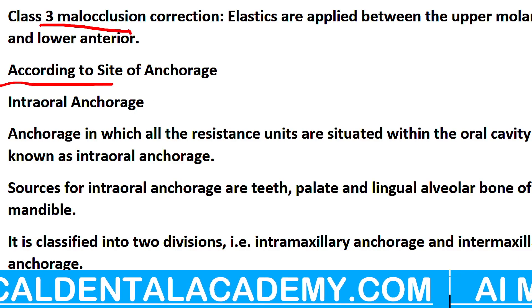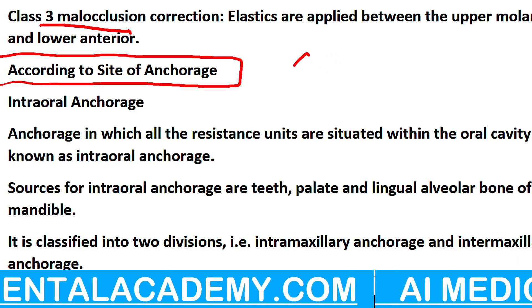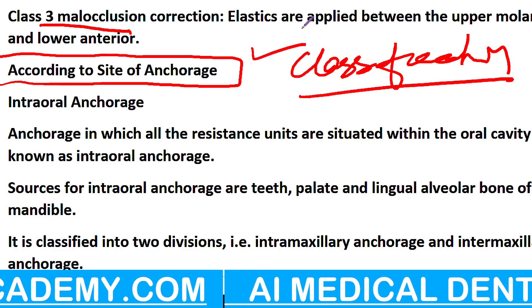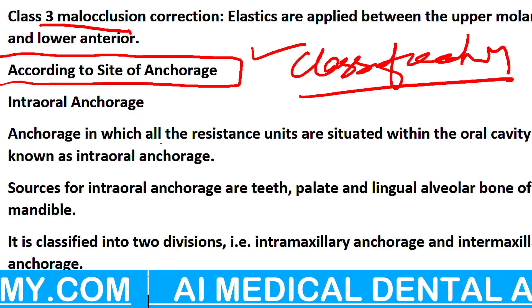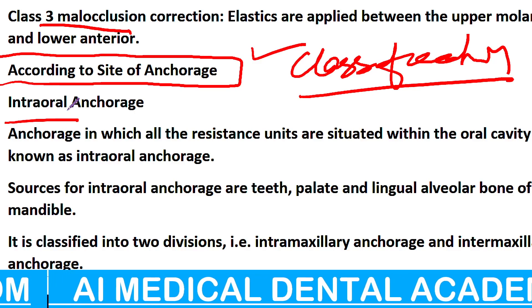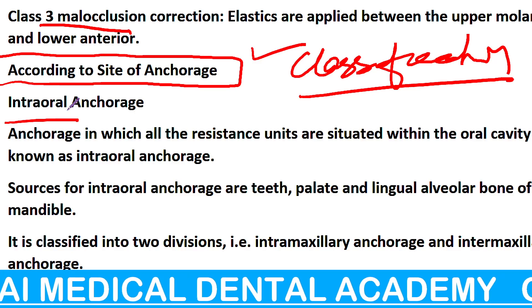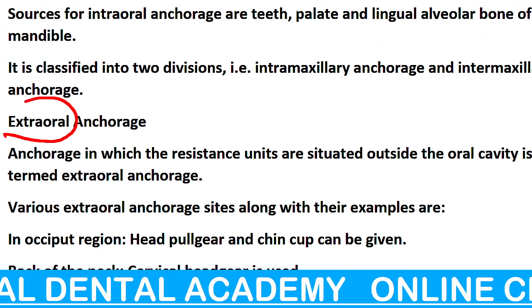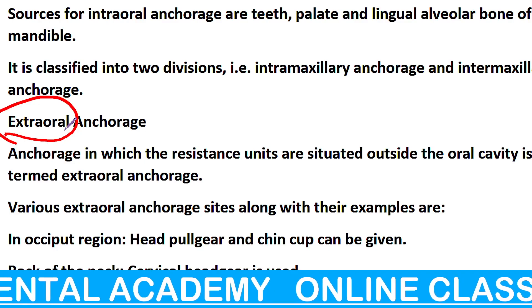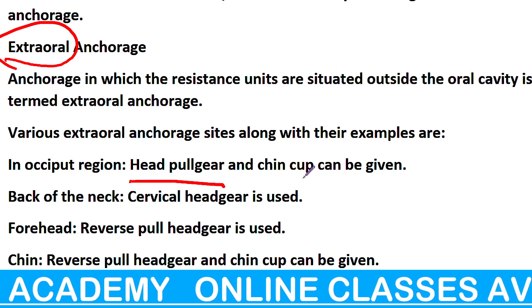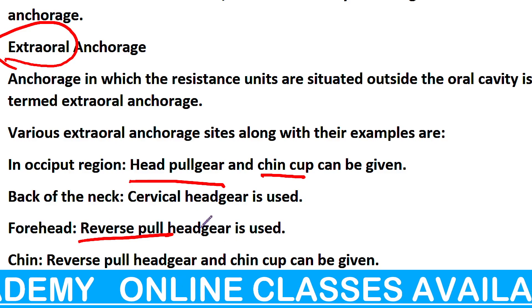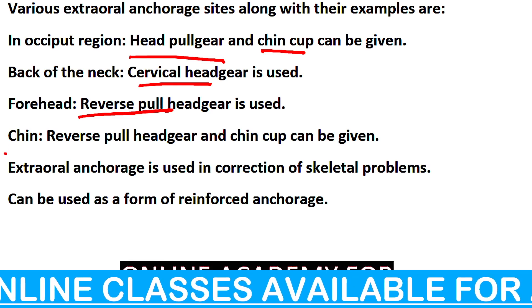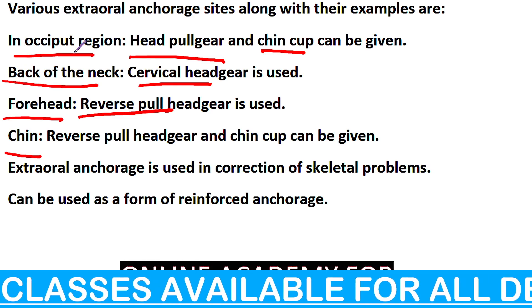According to the site of anchorage — यह classification अभी चल रहा है — exam में classification ही पूछा गया है तो आपको अच्छे marks मिल जाएंगे। Intraoral मतलब teeth के अंदर ही — oral cavity के अंदर ही हमको यह देना है। Extraoral मतलब जो anchorage है वो बाहर रखा है — कहीं chin पर, कहीं head gear पर, occipital area पर। अलग-अलग बहुत सारे आते हैं — cervical आता है — chin पर, forehead पर, back of neck पर।